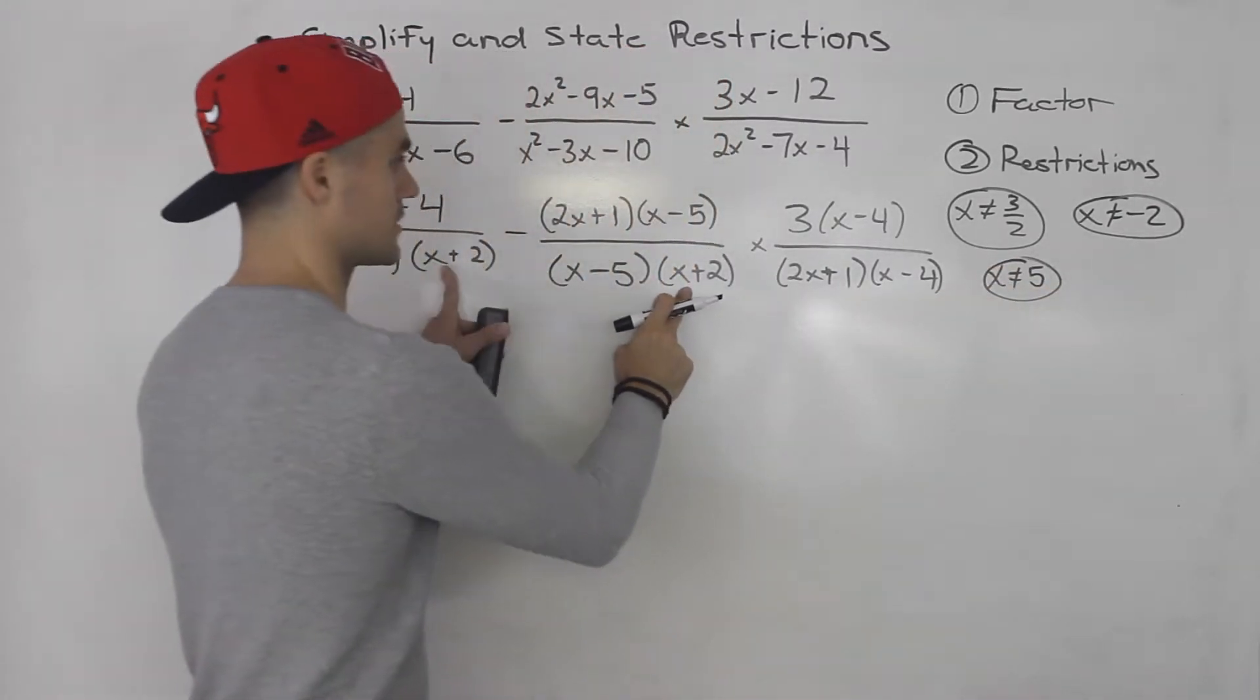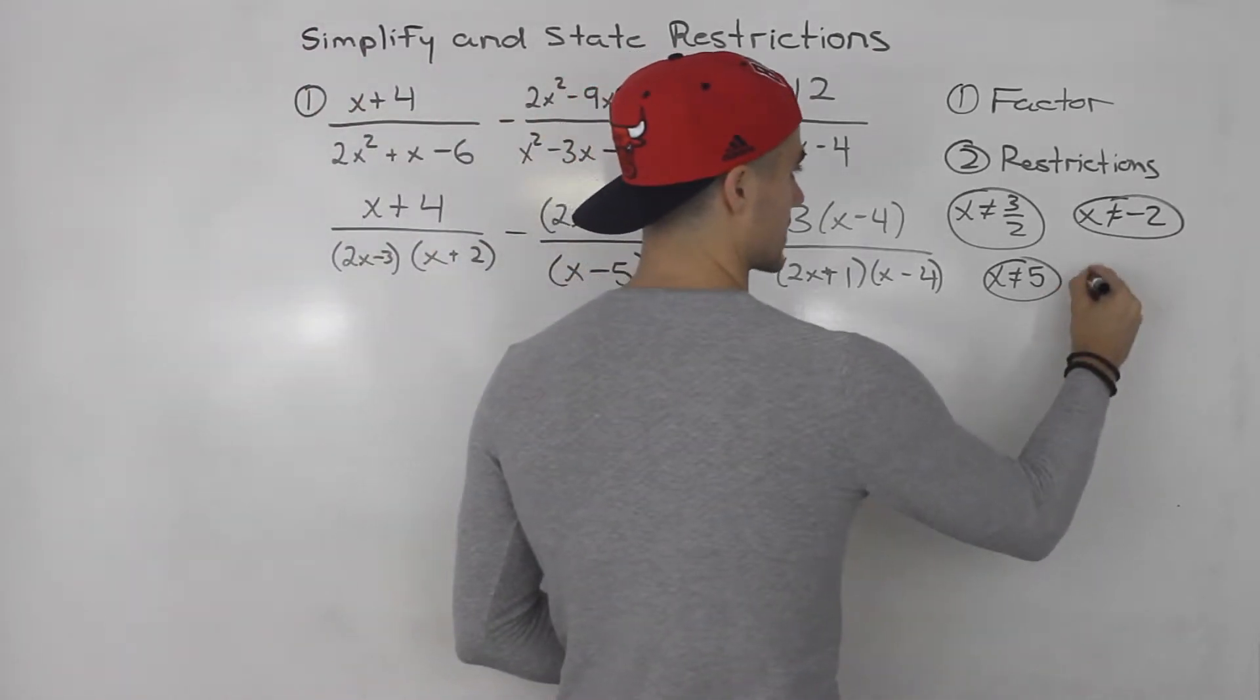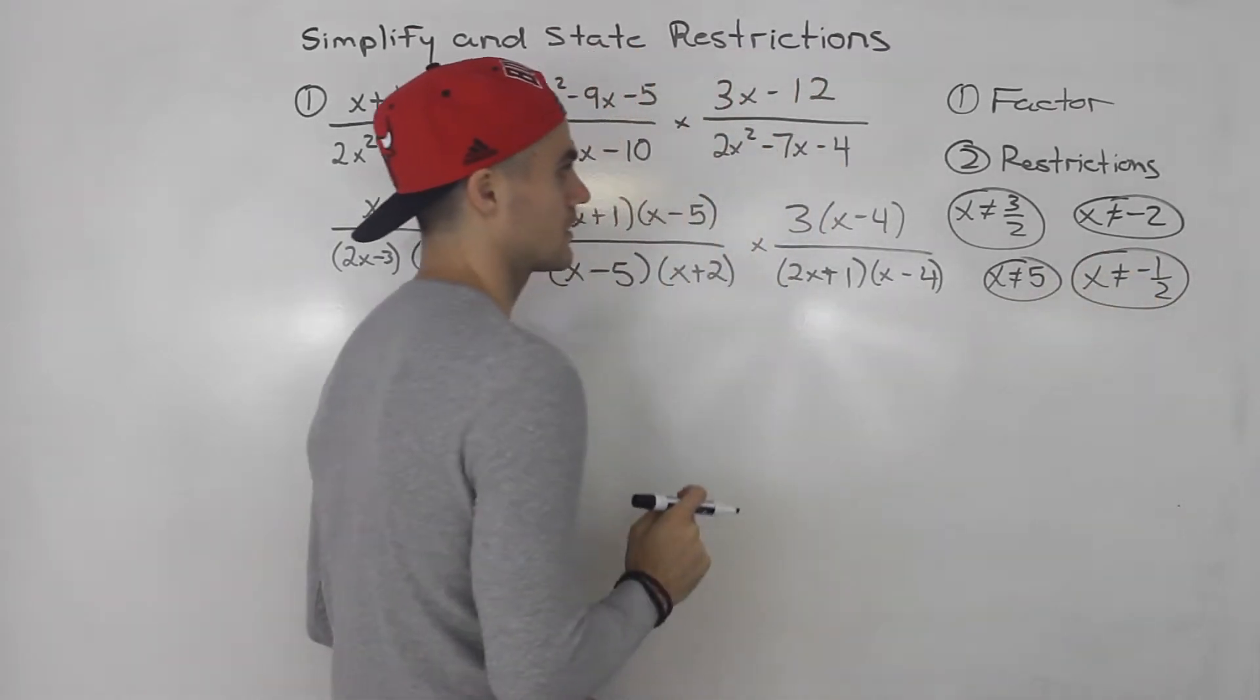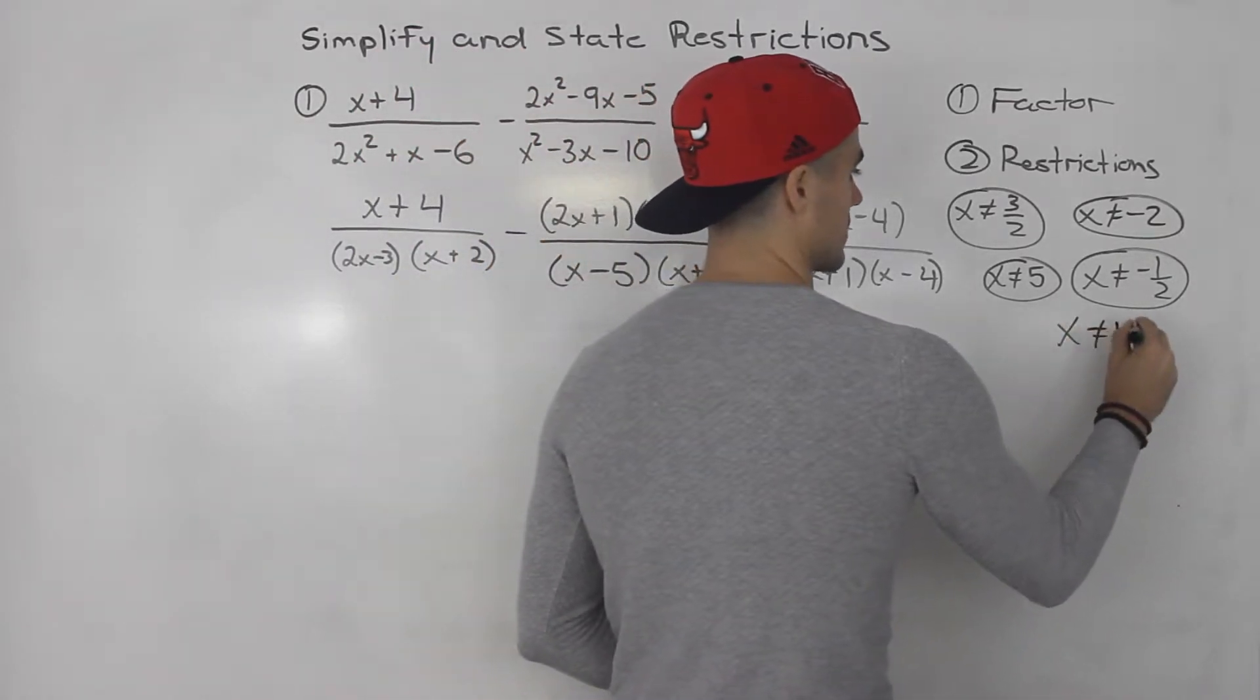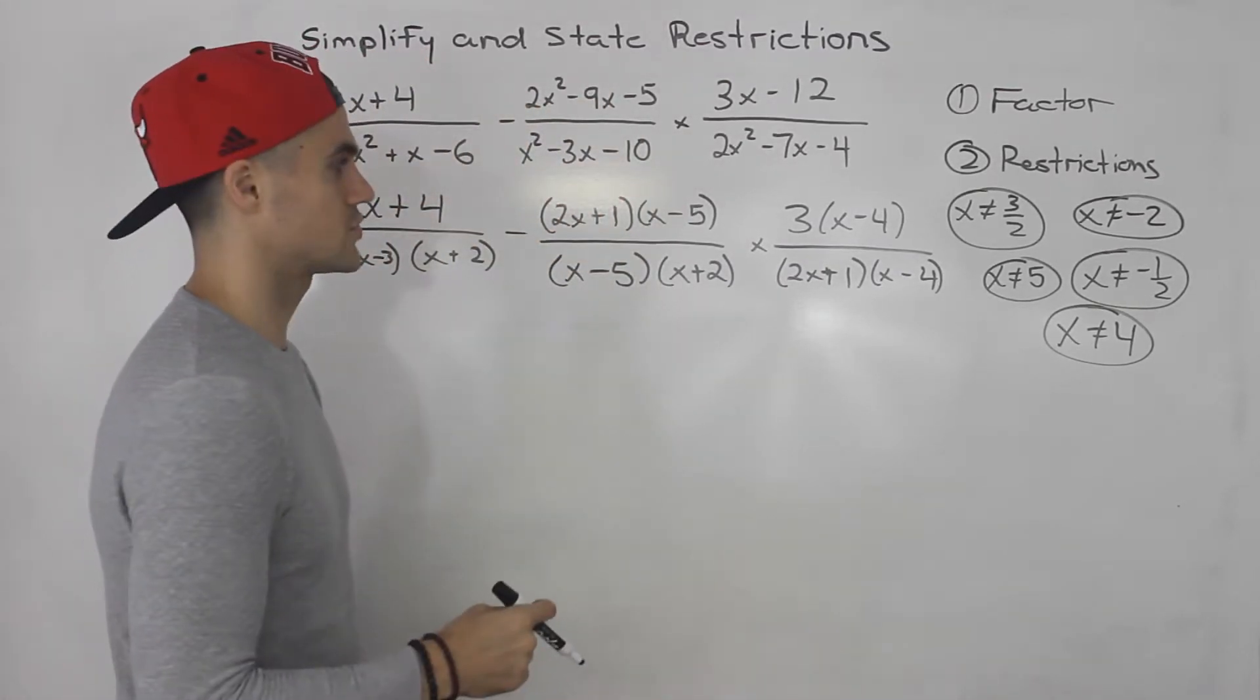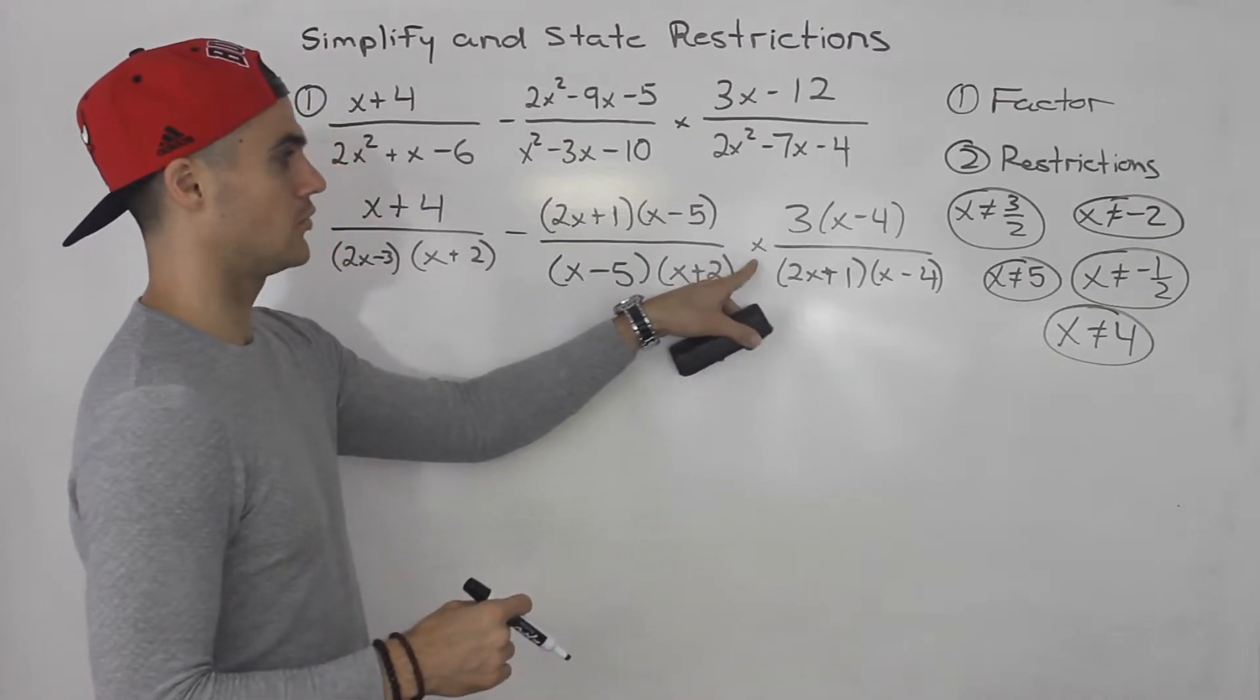Here, x plus 2, we already took care of that. 2x plus 1 cannot equal zero, which means x cannot equal negative 1 over 2. And x minus 4 cannot equal zero. We did not take care of that. So x cannot equal positive 4. So in this question, we actually have five restrictions. Now, remember, we are multiplying here.